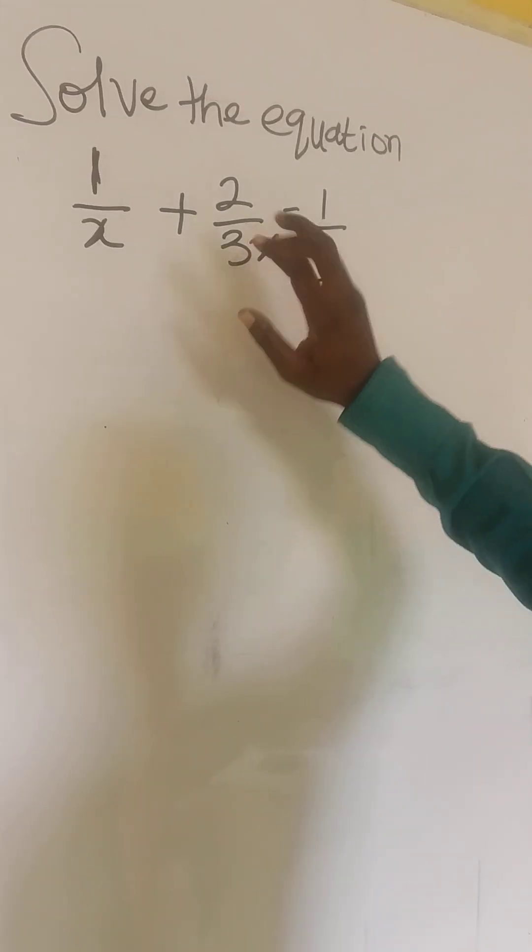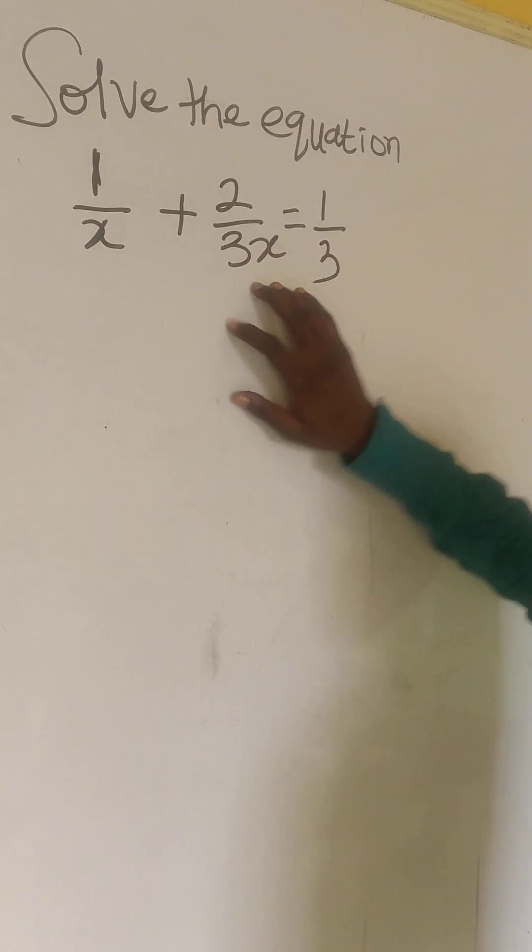We have to solve the equation 1 over x plus 2 over 3x equals to 1 over 3.